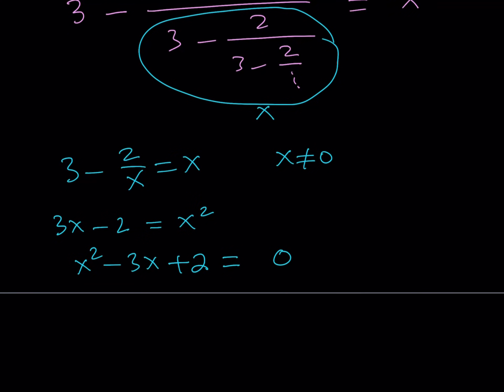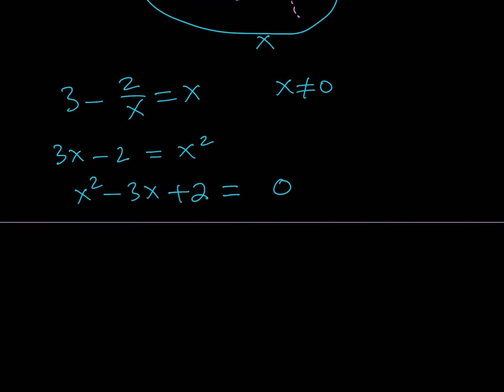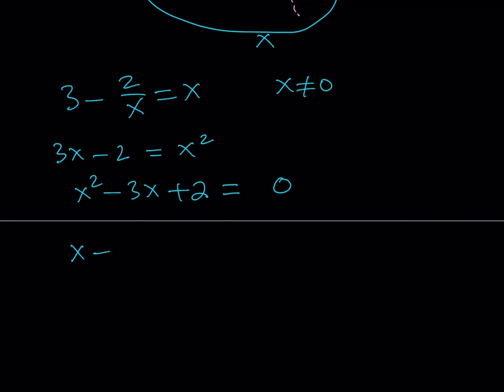And obviously, this is a factorable trinomial. So we can just go ahead and factor it as x minus 1 and x minus 2. And it's equal to 0. Great.